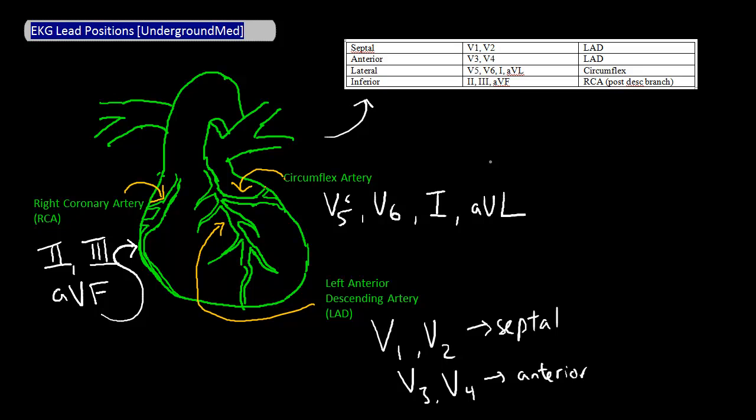For example, if you see signs of an MI in leads V1 and V2, that tells you that the patient is having a septal MI due to a clot in the LAD.